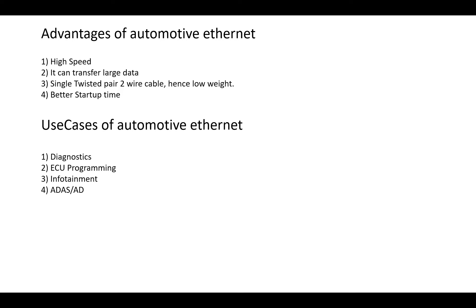Automotive Ethernet uses a single twisted pair — a two-wire cable — which keeps weight low. In consumer Ethernet, four or eight wire twisted-pair cables are used, but so much cabling cannot be put into a vehicle. The single twisted pair reduces weight, and better startup time is also one of the advantages — we will discuss these points one by one.